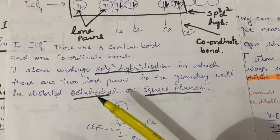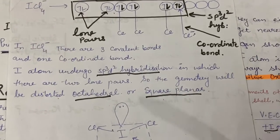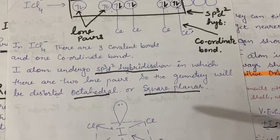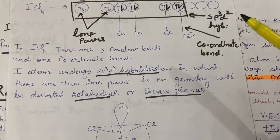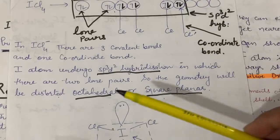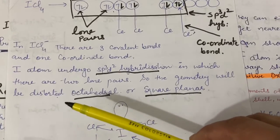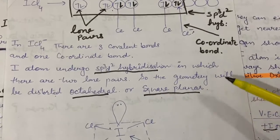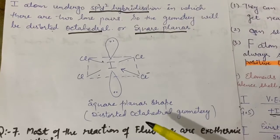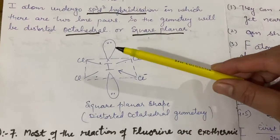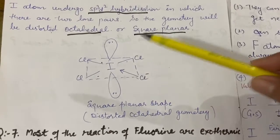Since the hybridization is SP³D², the geometry is octahedral, so here we call it distorted octahedral. The shape is square planar but the geometry is distorted octahedral - there are two lone pairs, three normal covalent bonds, and the fourth is a coordinate bond.